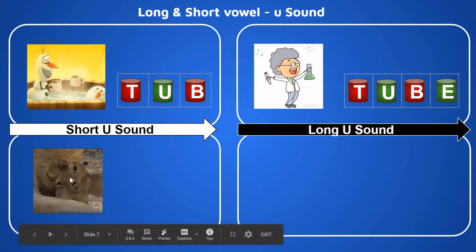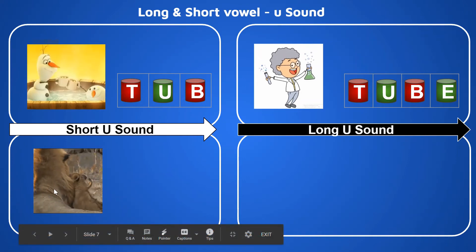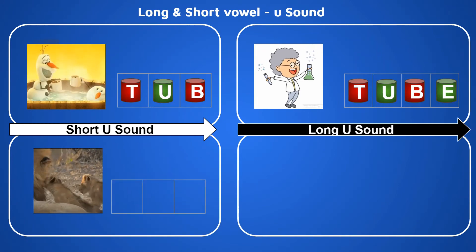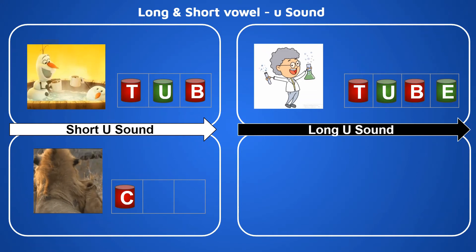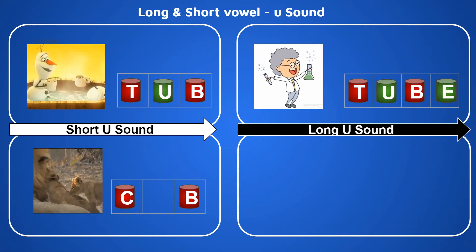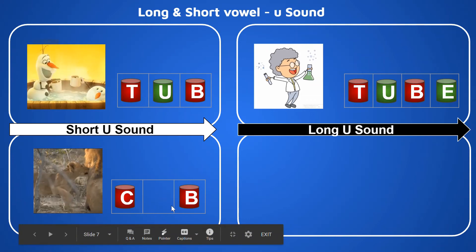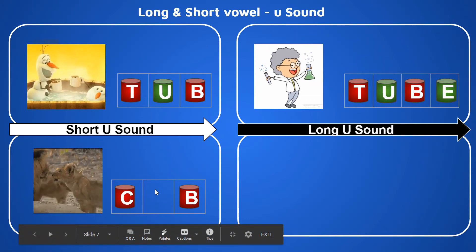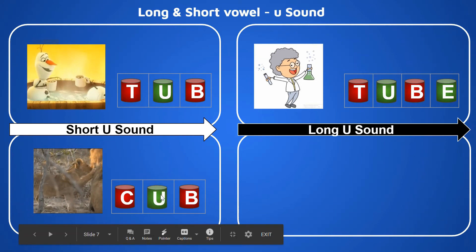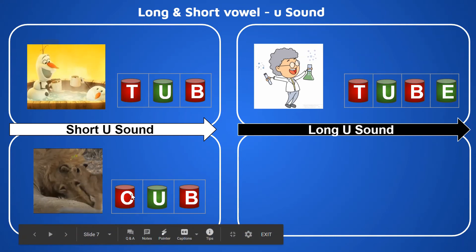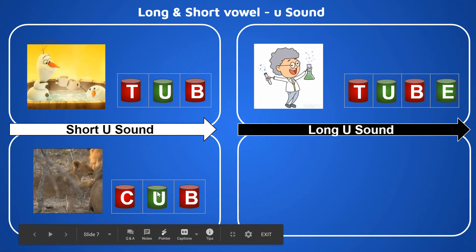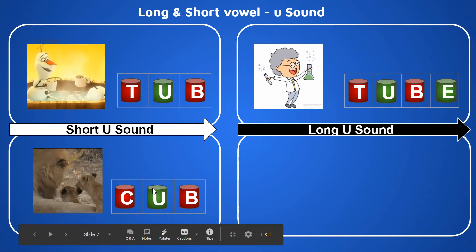Look at the cub — the lioness has so many cubs! Let's try the word 'cub'. What is the beginning sound of 'cub'? It is C. What is the ending sound of 'cub'? That is B. What is the middle sound? C, 'uh', B. What makes the sound 'uh'? Which alphabet makes the sound 'uh'? That is U — U says 'uh'. So: C, U, B — that is the short, phonetic sound of alphabet U.